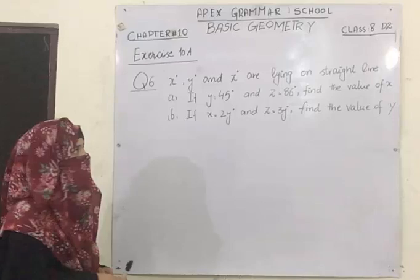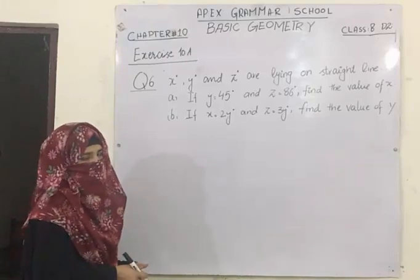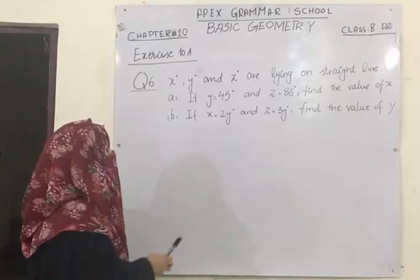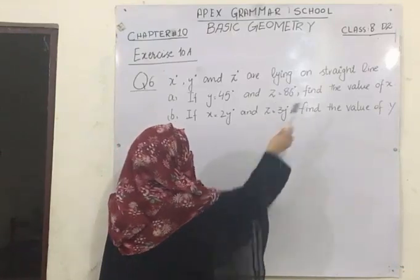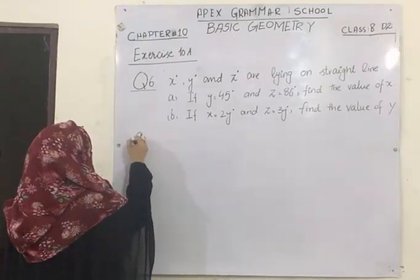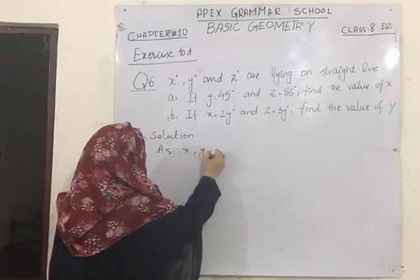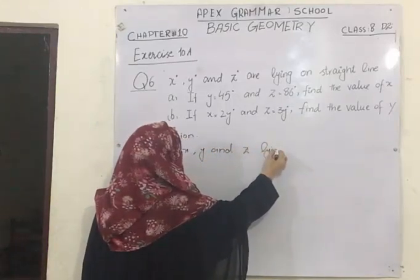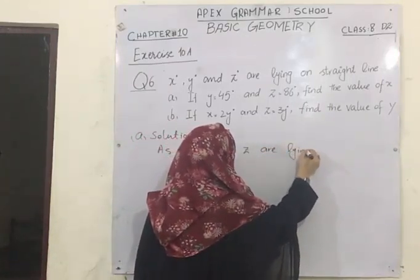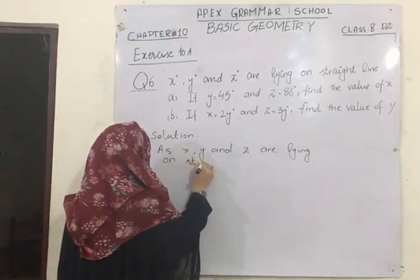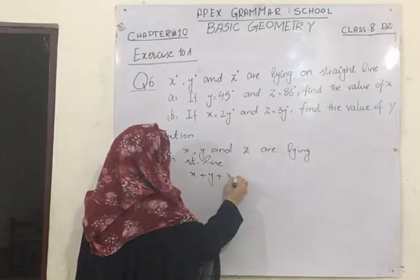Next I am going to solve question number 6. In question number 6, you are given that X, Y and Z are lying on a straight line. If they are lying on a straight line, they are adjacent, which means they will add up to make 180 degrees. In part A, the value of Y is 45 degrees and the value of Z is 86 degrees, and we have to find the value of X.